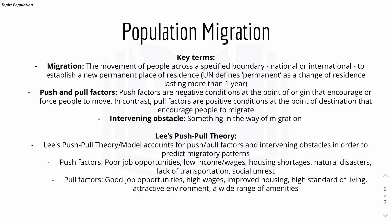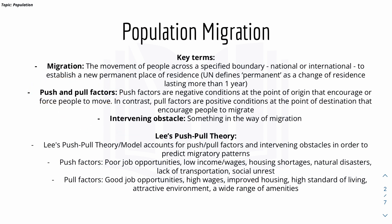The opposite is pull factors, which are positive conditions at the point of destination, or the final destination country, that encourage people to move to that country. We also have intervening obstacles, and the least push and pull theory builds upon the push and pull factors. This model accounts for push and pull factors and intervening obstacles in order to predict migratory patterns.